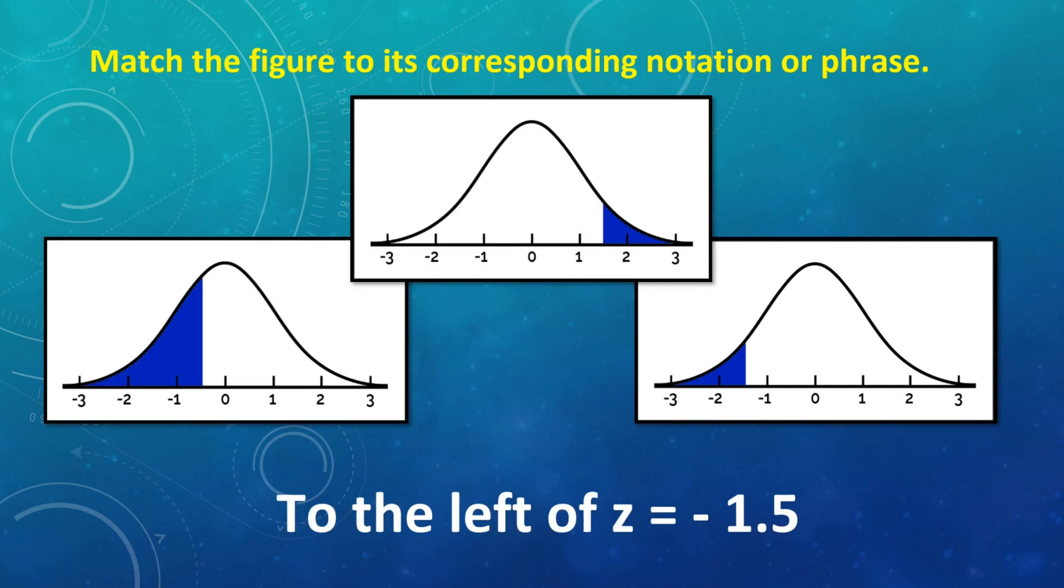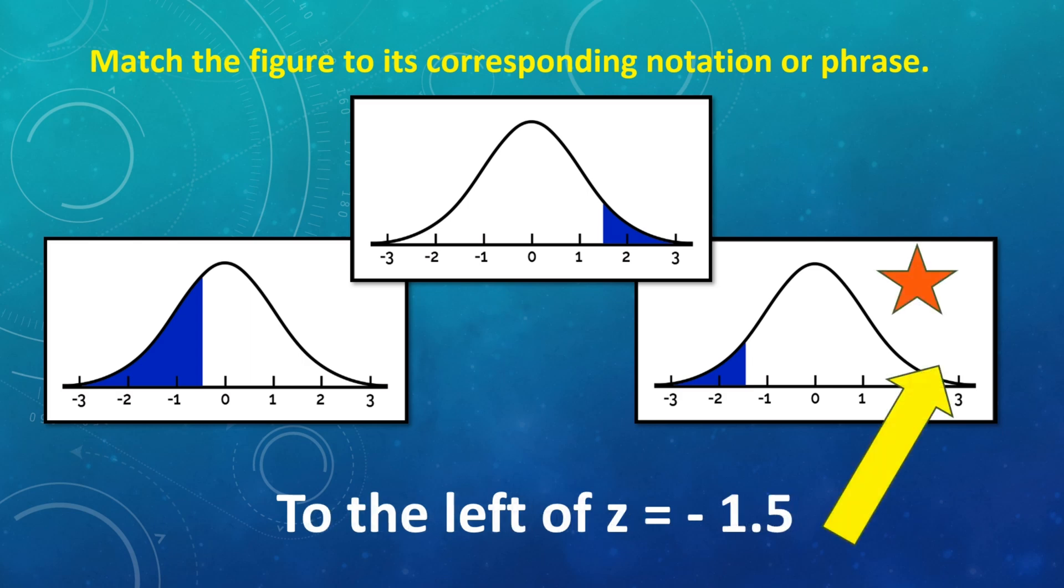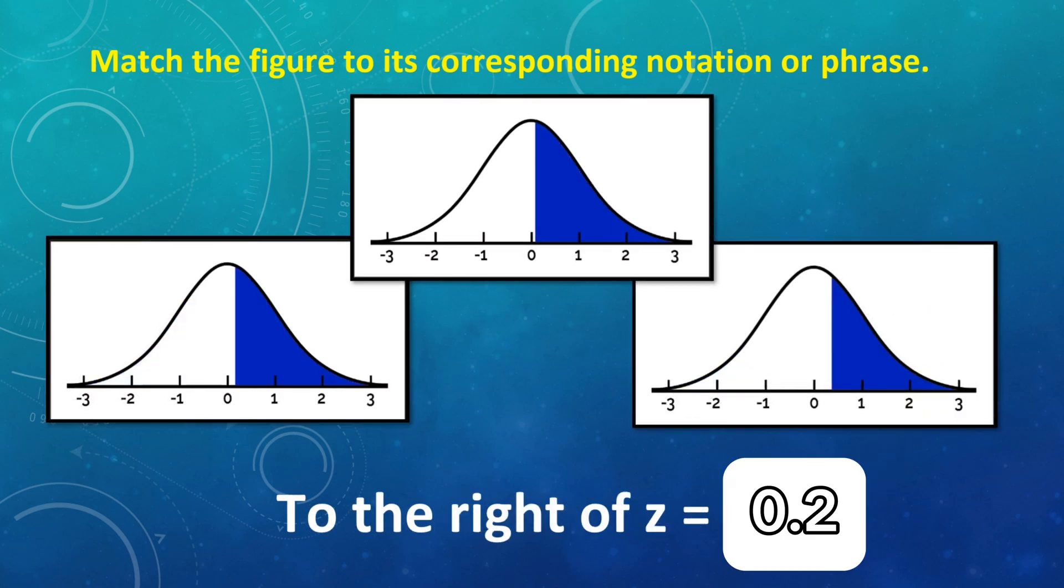Next, to the left of z equals negative 1.5. Meaning, pababa. So, negative 1.5. The correct answer is this one, which is in the right side.